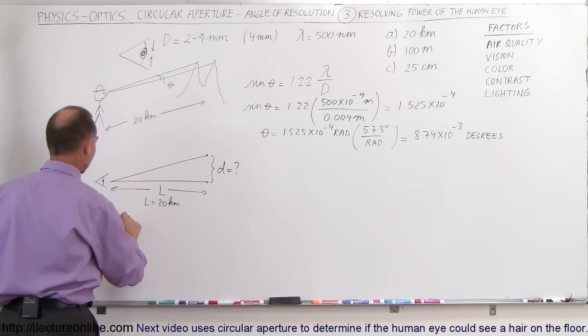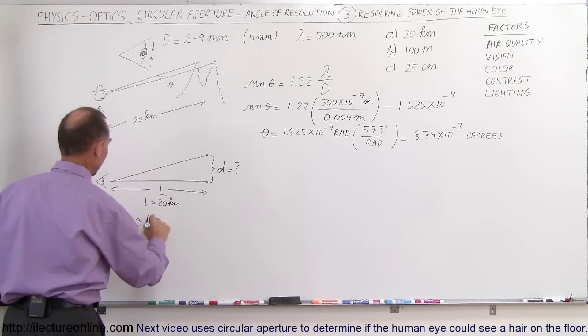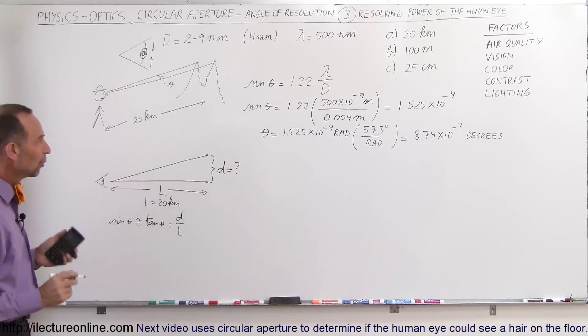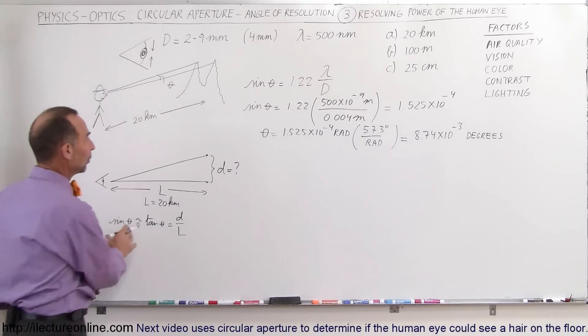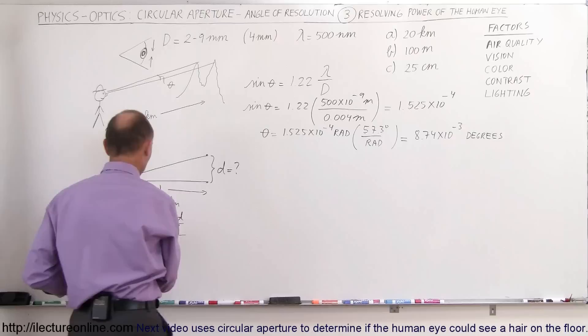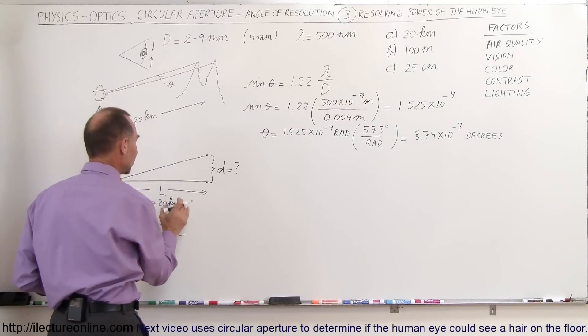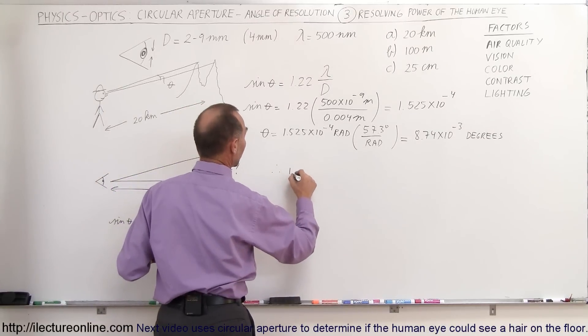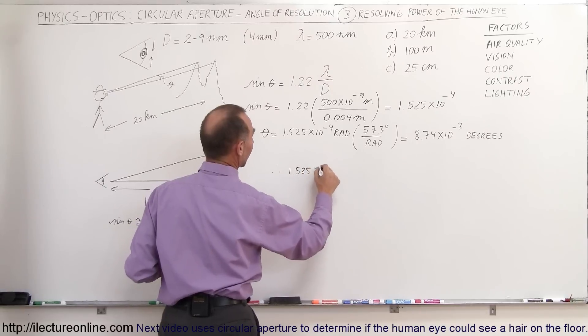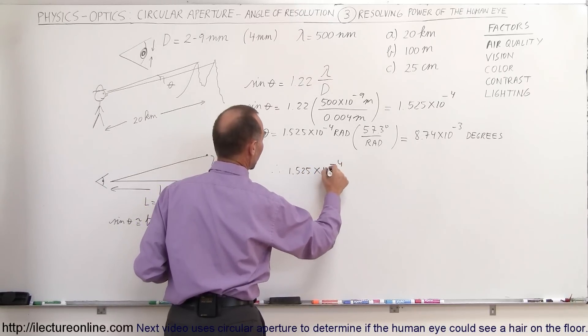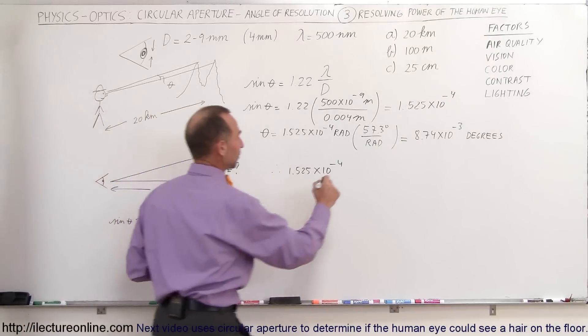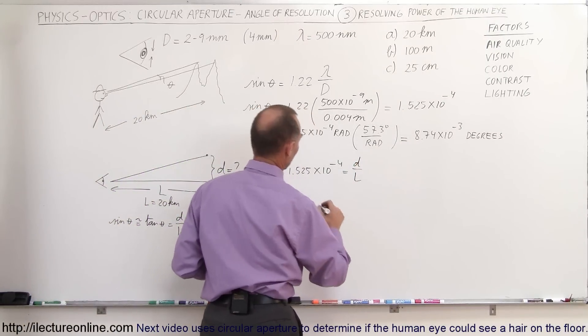the sine of theta is approximately equal to the tangent of theta, which is equal to the opposite side over the adjacent side, D over L. Which means that the sine of theta, which is equal to this quantity right there, can be said equal to the tangent of theta, which is equal to D over L. So therefore, we can say that 1.525 times 10 to the minus 4 radians, that's equal to the sine of theta, is equal to D over L. In other words,